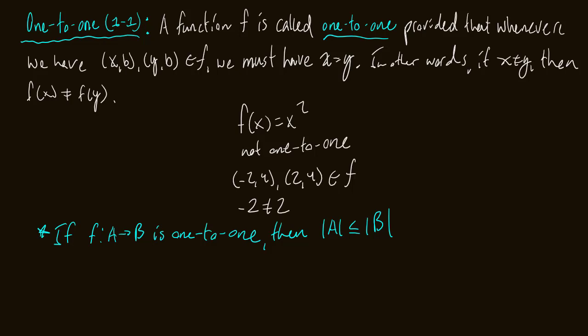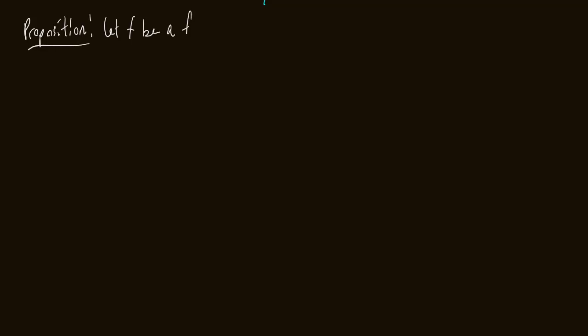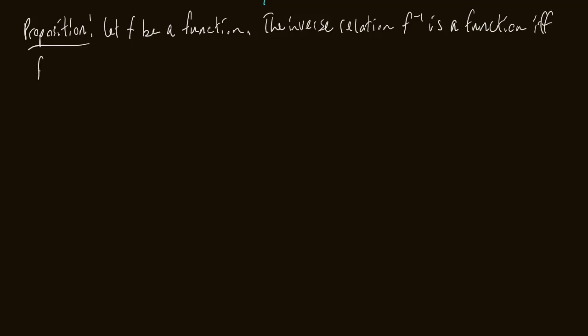Now let's look at a proposition that we're actually going to prove. Proposition: let f be a function. The inverse relation f inverse is a function if and only if f is one-to-one. This is a straightforward proof — we're essentially just unraveling definitions. It could have been left as an exercise, but let's go through it.